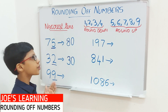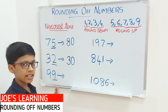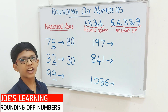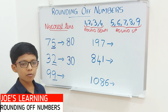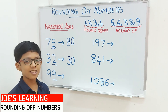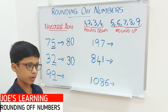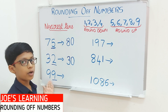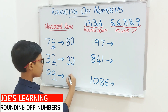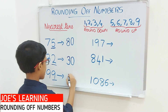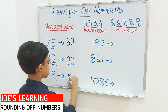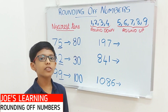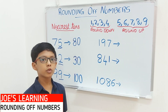Now let's try with the next example. We have to look at the digit in the 1's place — 9 is in the 1's place. And as 9 is greater than 5, we have to round this number to the tens that is after it. The next tens after this number is 100. So 99 rounded off to the nearest tens equals 100.